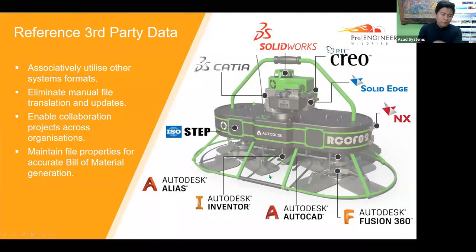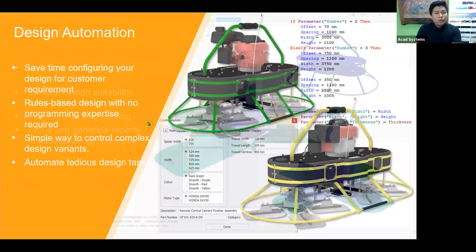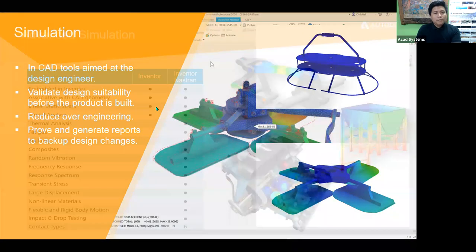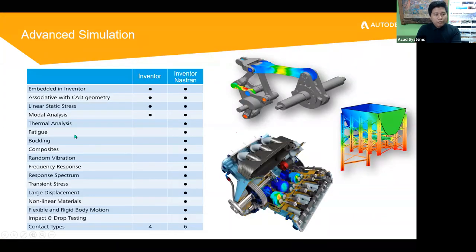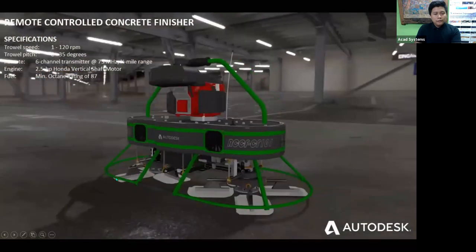Whether you use Fusion 360 or Inventor, third-party software can open and view files as a 3D model directly as a solid body or surface. Advanced simulation — including fatigue, buckling, and more — can also be done using PDMC through Nastran Inventor Nastran.